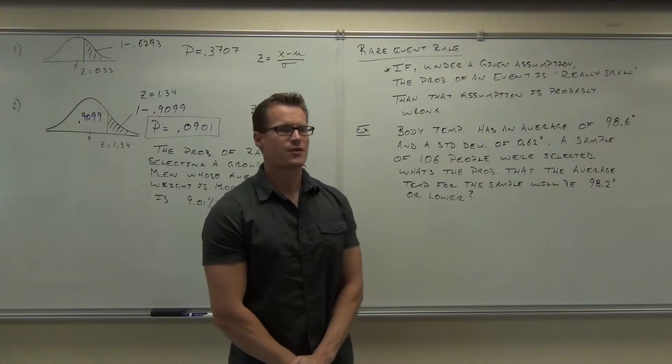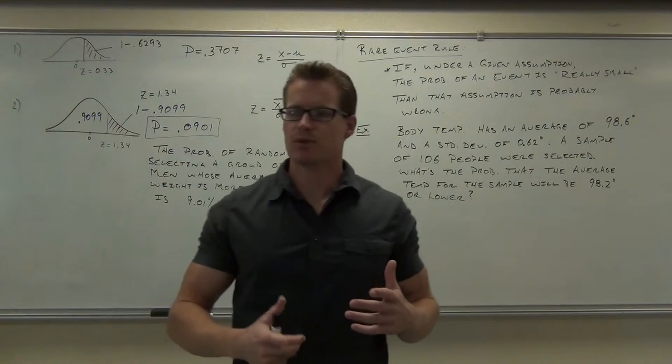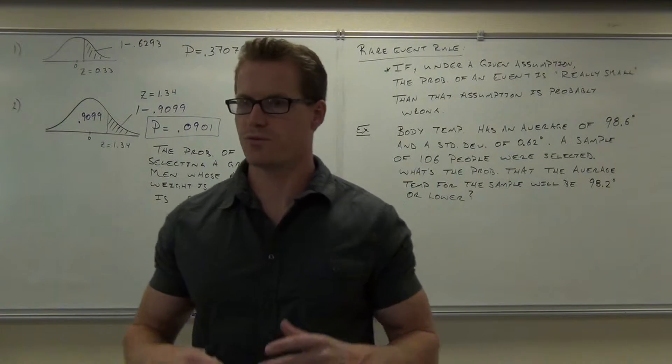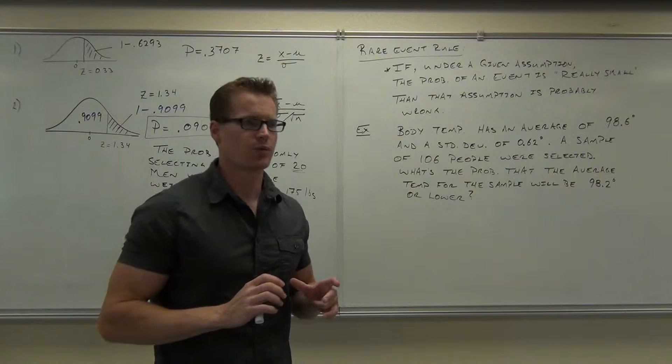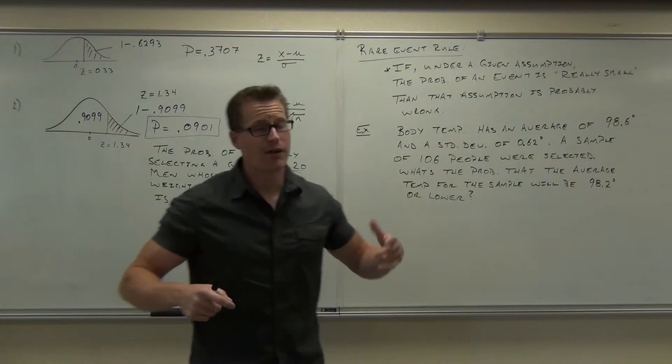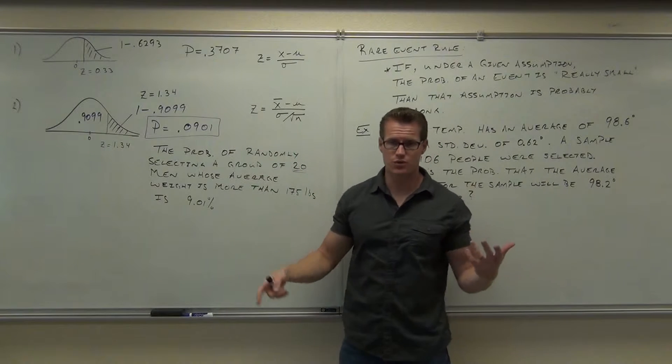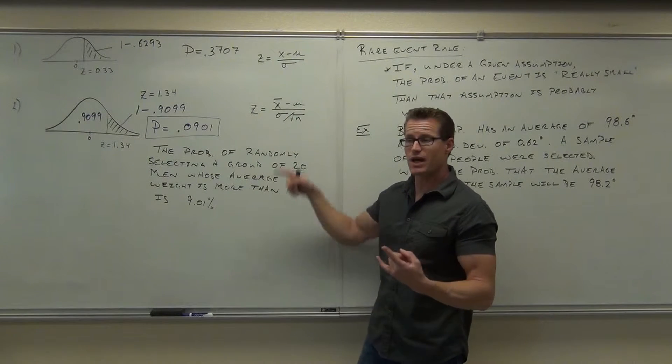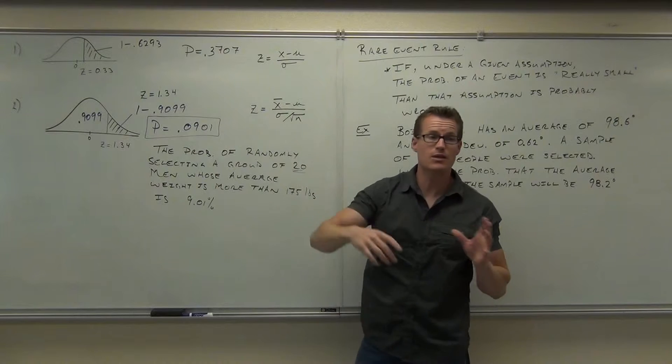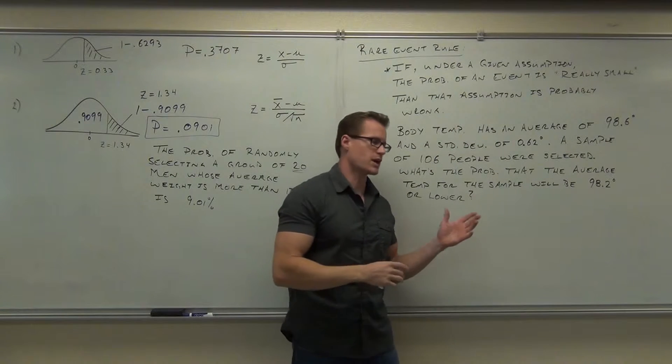Let's talk about this just a little while. The first thing, you've got to be able to identify whether you're working with a group or whether you're working with an individual because you have to know which Z-score you're going to calculate. This one, or this one. There's only two for right now, but you've got to know which one is which. That's one of the key things we're learning in this whole section.